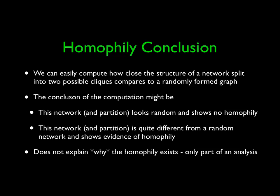Now what? That's an important thing. The last thing I want to tell you is that we can compute it. If we split our network in half, we can ask, does this compare to a randomly formed graph? And the conclusion might be, well, that partition we picked looks random. There's no homophily, at least what you just picked. There might be another one, but the one we picked does not demonstrate homophily. Or we can say, wow, we partitioned this, and it's very different from a random network, and shows evidence of homophily. And then we go, whoa, we've got it. We found it. So the number says you found it.